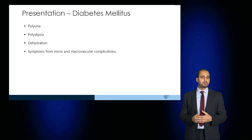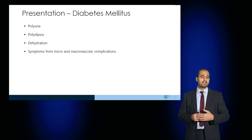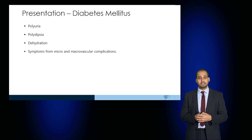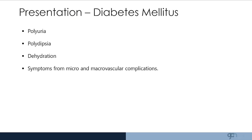Patients will present with symptoms of polyuria and polydipsia — drinking lots, feeling thirsty and passing urine frequently. They will also feel dehydrated, or they may present as a consequence of symptoms related to micro or macrovascular complications such as decreasing vision, poor visual acuity or chest pain.